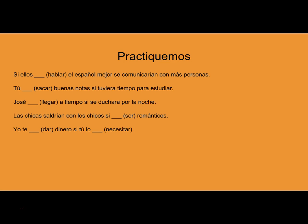Practiquemos. Si ellos hablaran el español mejor, se comunicarían con más personas. Hablaran is with the SI part of the sentence — it needs the imperfect subjunctive.